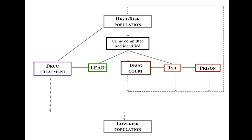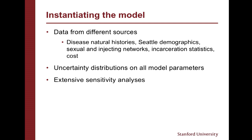But now let's say we add LEAD into the model. At the time that a crime is committed, individuals can be moved into this program and diverted into drug treatment, so they're much more likely to get connected to those services. We would then expect to have a much greater flow into the low-risk population. To actually quantify that difference in the low-risk population and therefore the difference in disease transmission, we need to instantiate the model. We take data from a number of different sources, put uncertainty distributions on all of our model parameters, and conduct extensive sensitivity analysis — because it's a core component of all policy evaluation to be able to speak to the robustness of our conclusions.